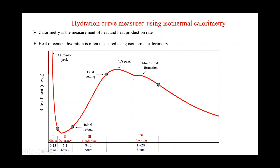Sometimes a third peak is observed and sometimes it is not — it depends on the formation of monosulfate. If there is remaining aluminate in the solution, which may occur in high-alumina cement, that aluminate reacts with ettringite to form monosulfate, resulting in a small peak.